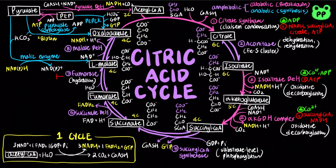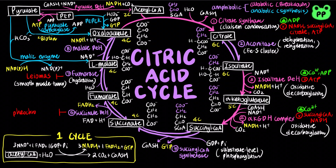Genetic defects in the fumarase gene lead to tumors of smooth muscle, known as leiomyomas, whereas mutations in succinate dehydrogenase may lead to tumors of the adrenal gland, known as pheochromocytomas. Genetic defects in the...